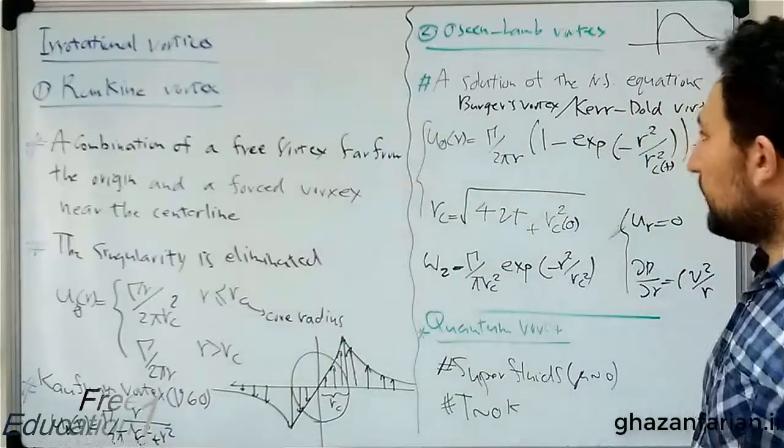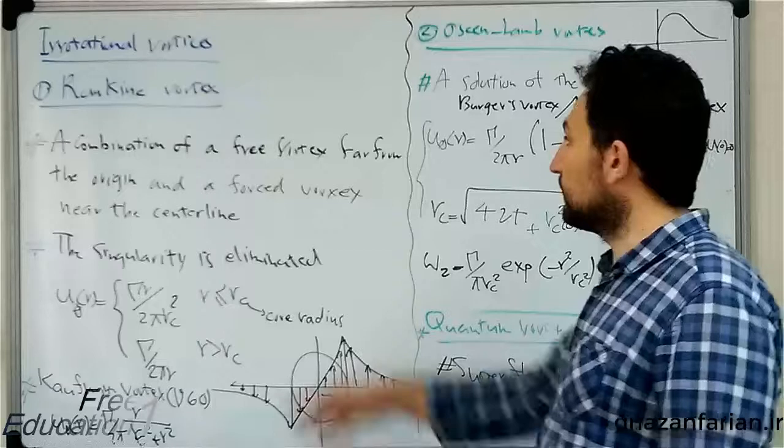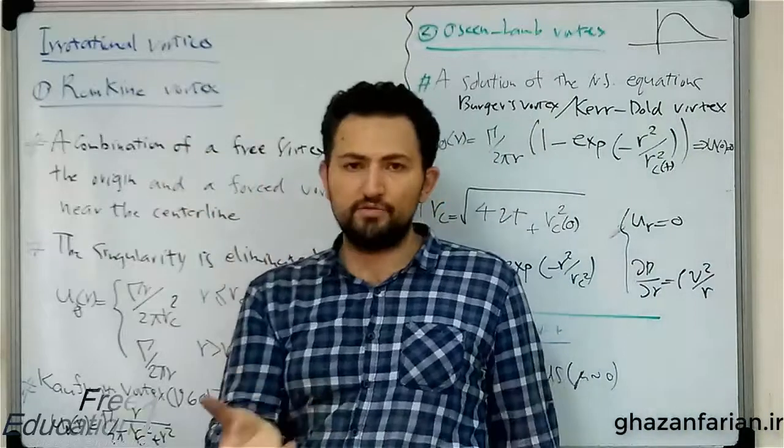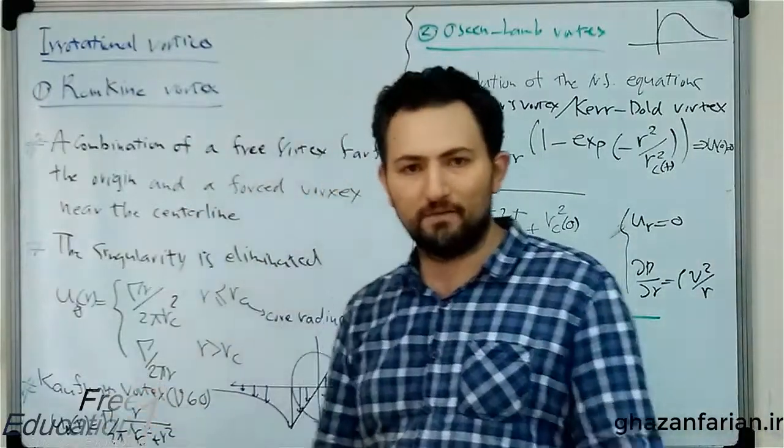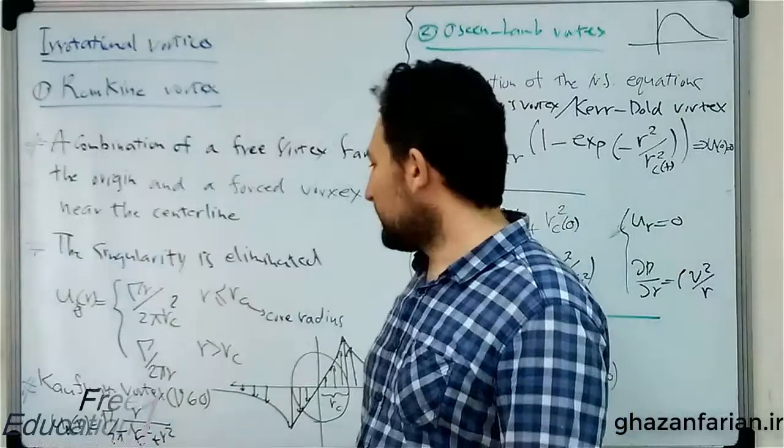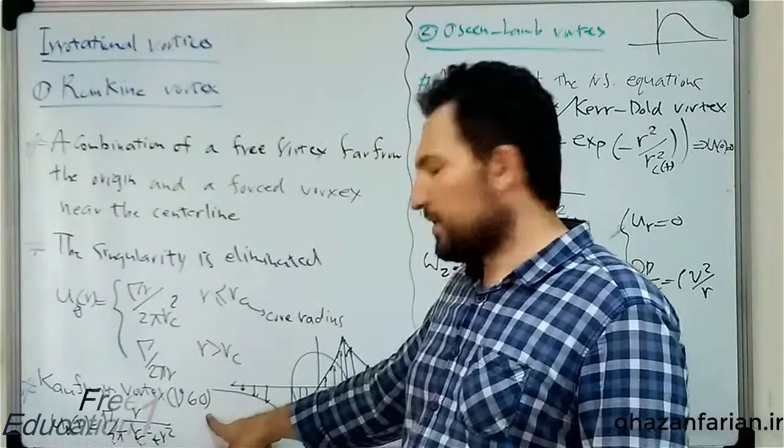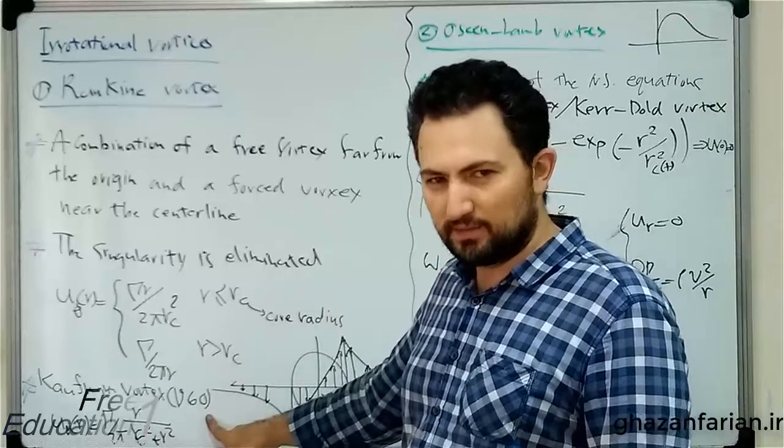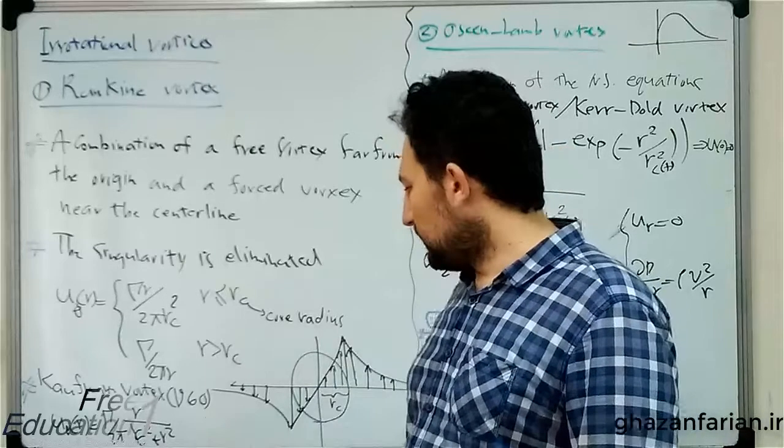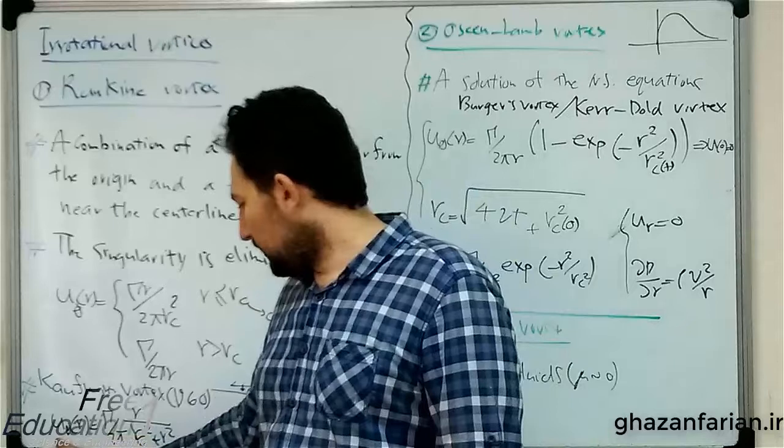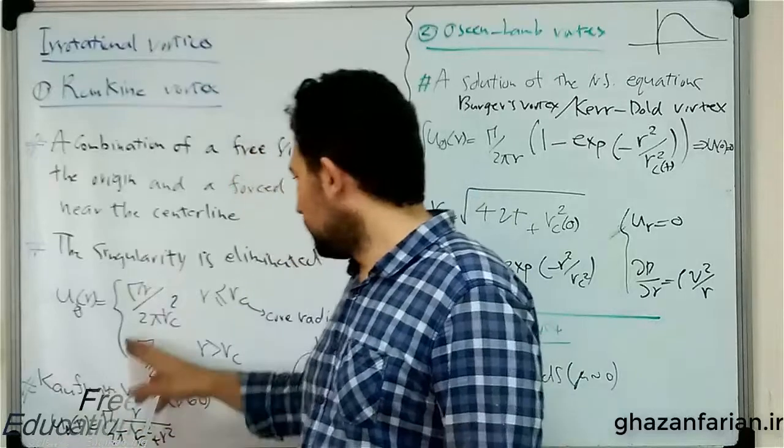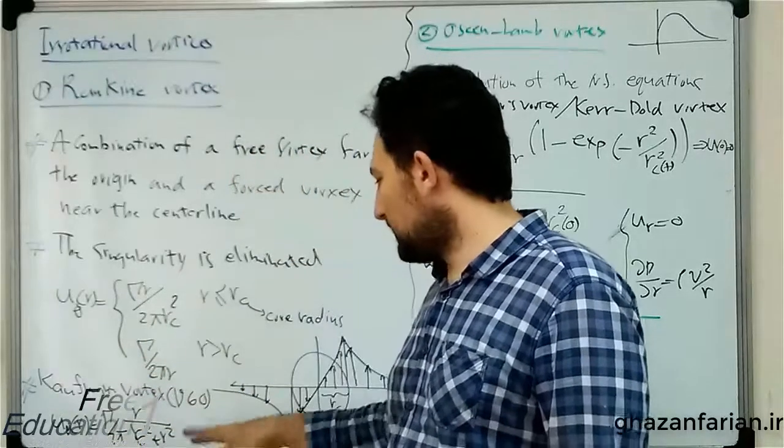There are other versions of the Rankine vortex, which is called the Kaufman vortex, presented around 1960. The velocity relation is similar to the Rankine vortex, but somehow different.